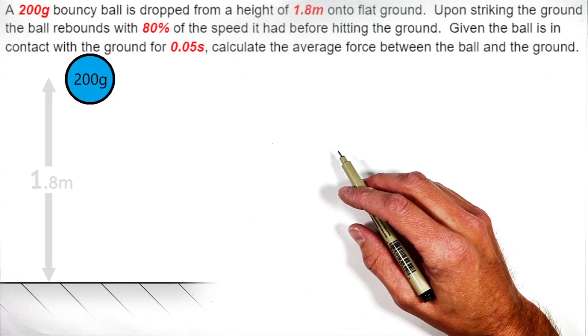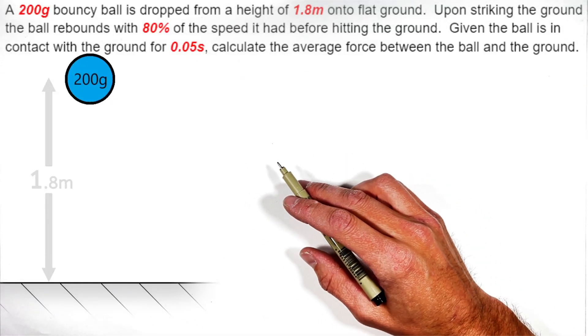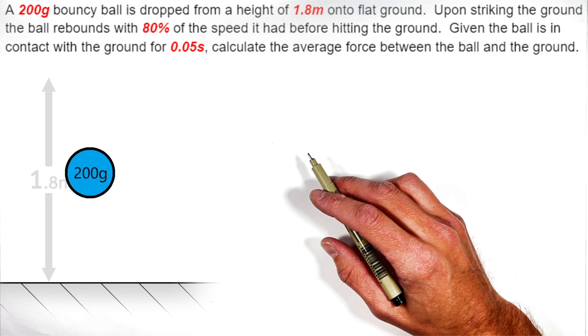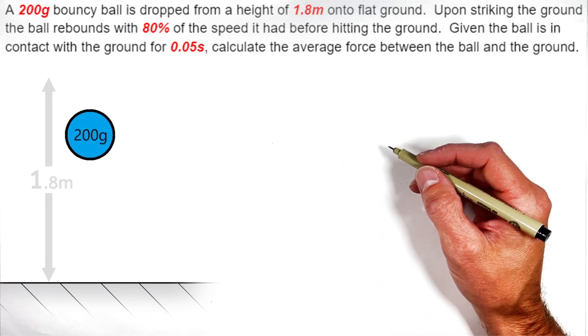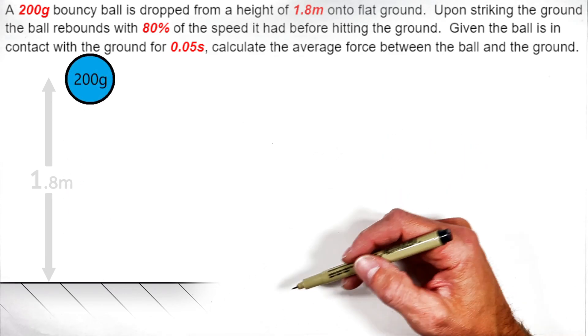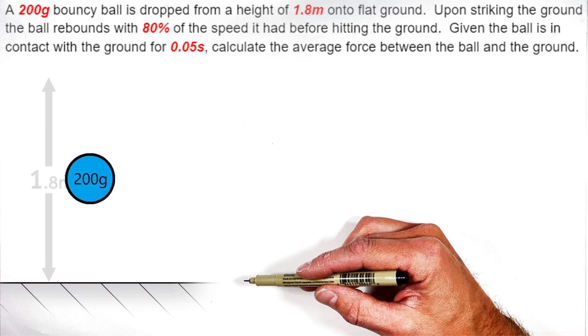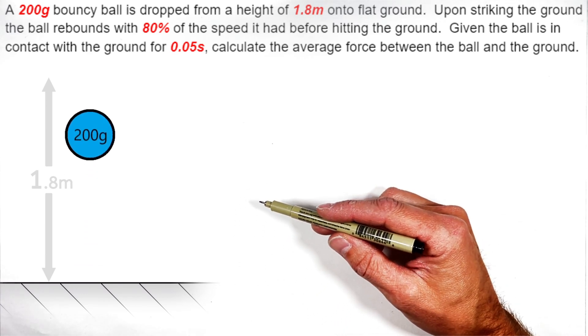All right, today we're tackling a momentum problem in which we have a 200 gram bouncy ball that's dropped from a height of 1.8 meters onto flat ground. Upon striking the ground, the ball is going to rebound with 80% of the speed it had before hitting the ground.